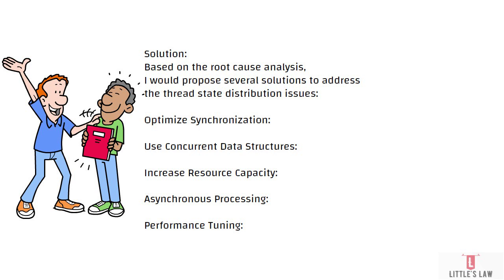The third solution is increasing resource capacity. If contention is due to resource constraints such as thread pool or connection pool saturation, you should consider increasing the capacity of these pools to accommodate higher concurrency levels. This approach will definitely work in most situations — if you are seeing contention due to resource constraints, scaling up the pools is a practical fix.